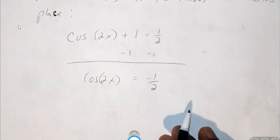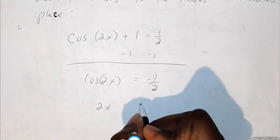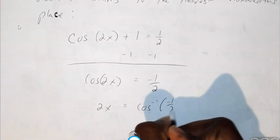You should know at this point in order to solve that you do the cosine inverse of both sides. So 2x equals the cosine inverse of negative 1 half.